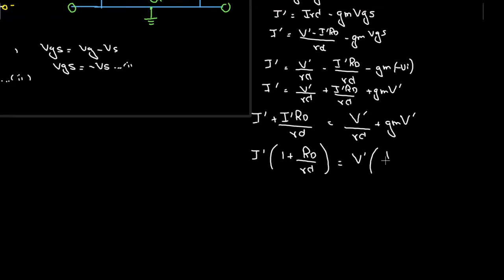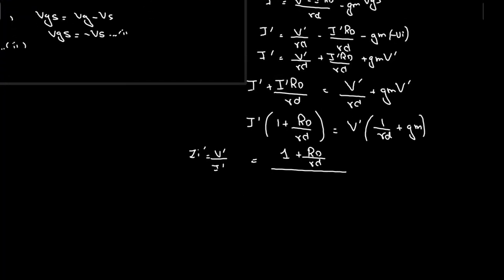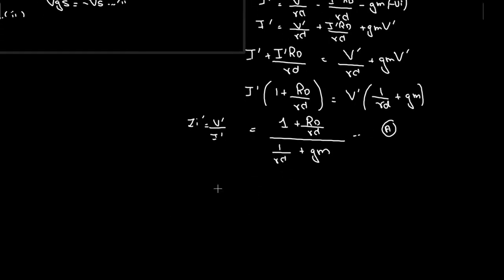Since Zi' equals VI/I' equals V'/I', we solve to get: Zi' equals (1 + rd/rd) / (1/rd + gm). This is equation (A). The total input impedance Zi equals RS in parallel with Zi'.